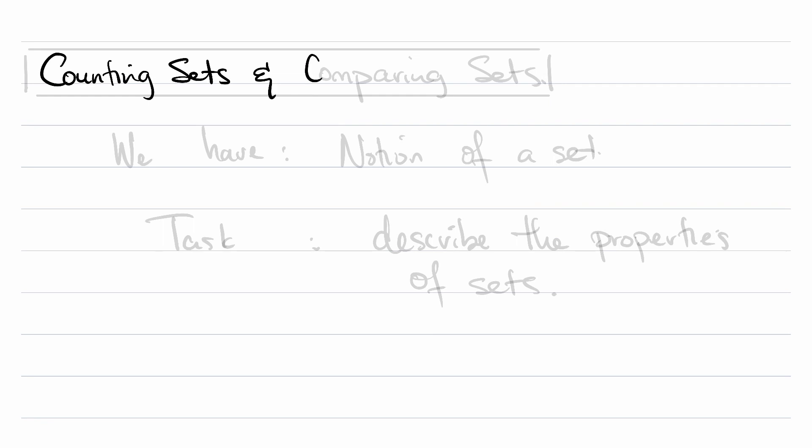Once we could count one, two, three, four, etc., we started to describe numbers as, say, big or smaller, even or odd, etc.